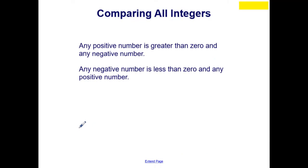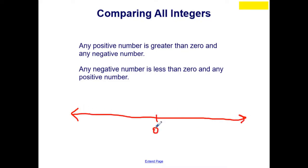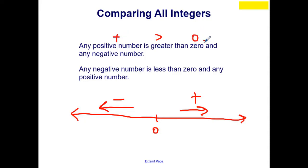When comparing all integers, we can make some generalizations. If we place 0 in the middle of our number line, positive numbers are to the right and negative numbers are to the left. Any positive number is greater than 0 and greater than all negative numbers. Any negative number is less than 0 and less than any positive number. We can generalize by just looking at the sign of a number or whether it is 0 itself, rather than always checking location.